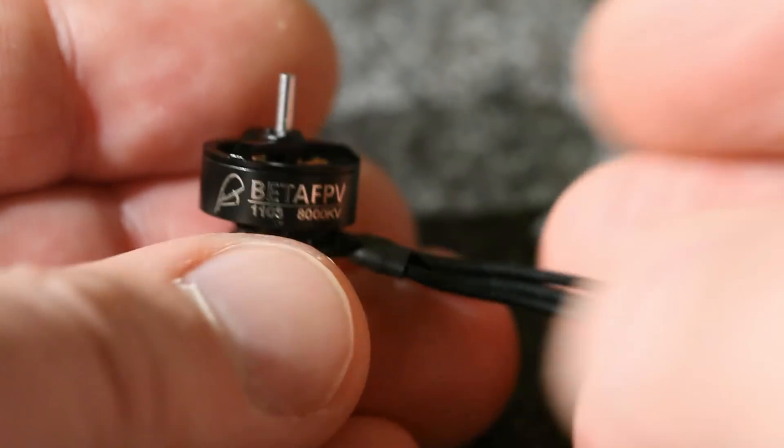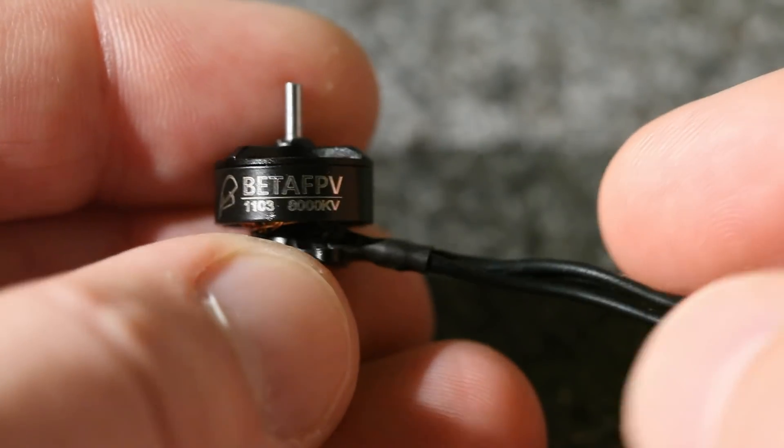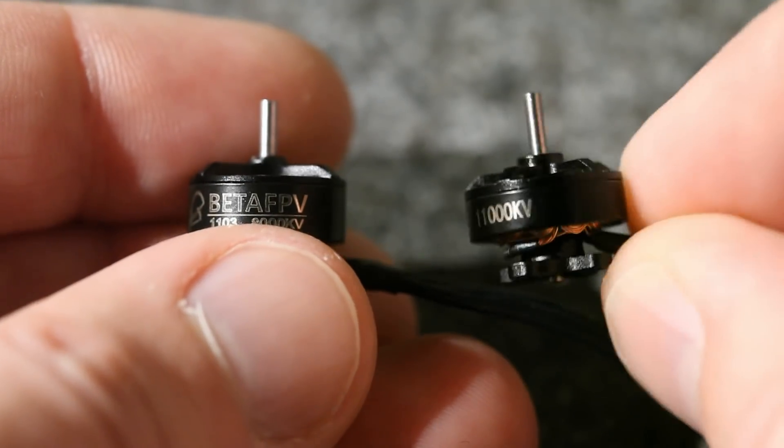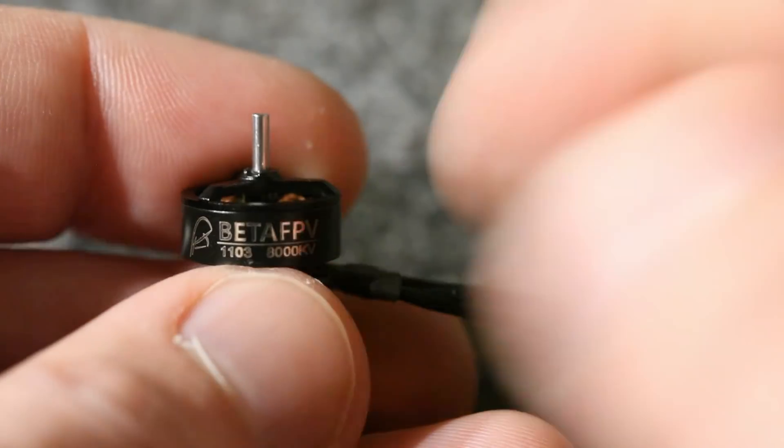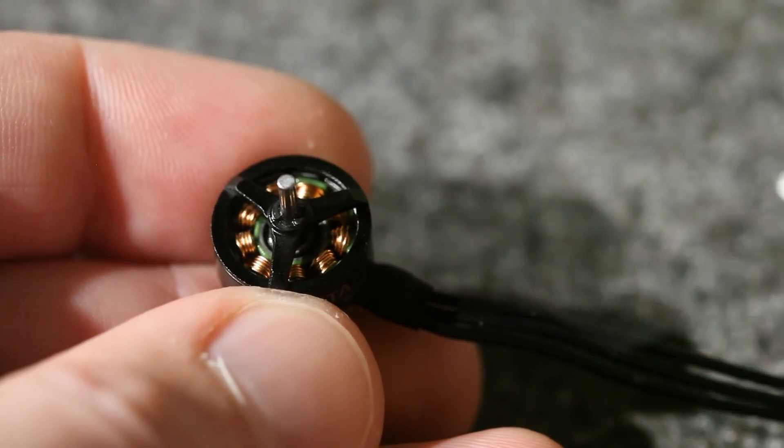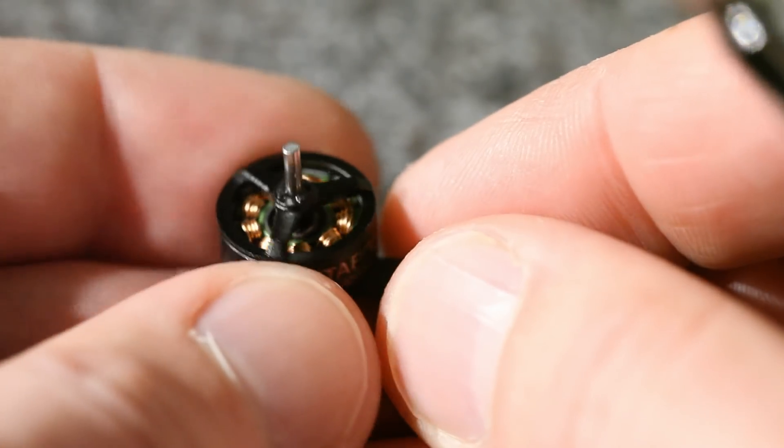Here it is up close. My initial impressions are good. There's a lot to like about this motor. It feels very smooth, seems like it's made of high quality components, but it is noticeably larger and heavier than its 11,000 kV counterpart. It has a 1.5 millimeter shaft and an open bell design. You can see there's no holes in here to capture the screws, so you're not going to be using screws with the props. You're going to push them on with this style of motor.